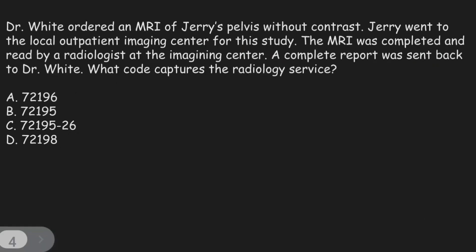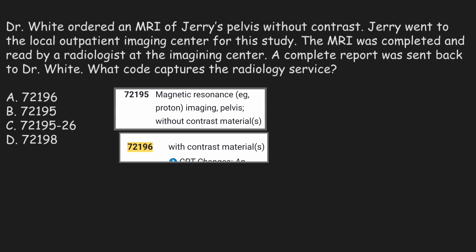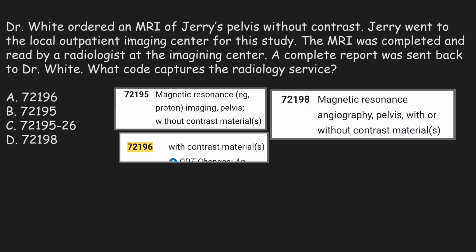Let's use the elimination method to solve the next question. In option A the code is 72196; in options B and C the code is 72195; in option D the code is 72198. Code 72196 is for magnetic resonance imaging, proton imaging, pelvis, with contrast material. Code 72195 is for MRI pelvis without contrast material. Code 72198 is for magnetic resonance angiography, pelvis, with or without contrast material. To choose the right code, we'll read the question and highlight the important terms.